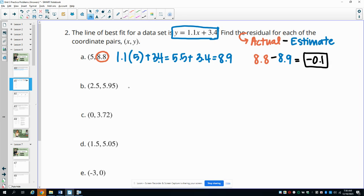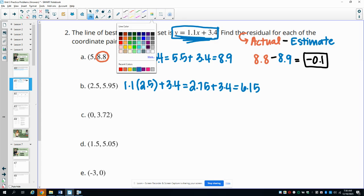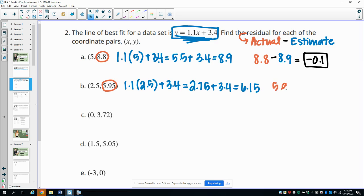Part B, we'll do 1.1 times 2.5 and then we'll add 3.4. So 1.1 times 2.5 is 2.75 and then we'll add the 3.4, which gives us 6.15. So we'll take the actual value of 5.95, the data value, and we'll subtract off our estimate of 6.15, which gives us a residual of negative 0.2.